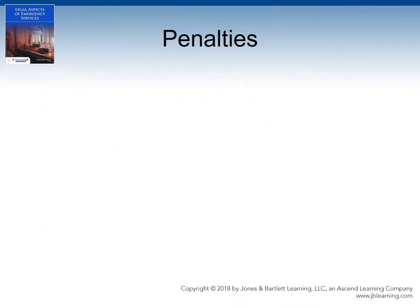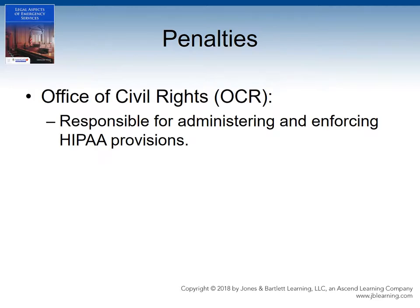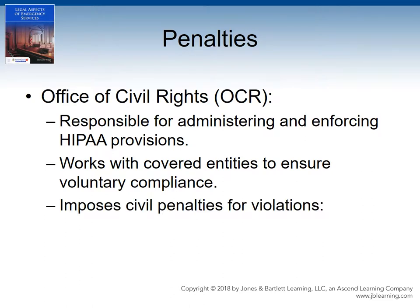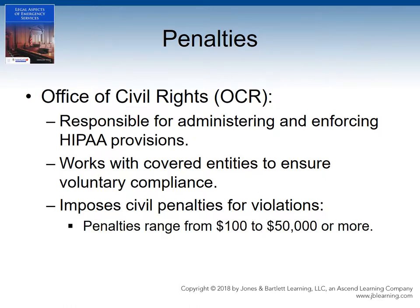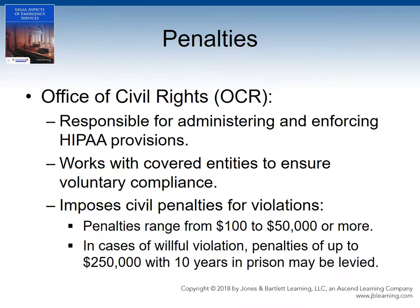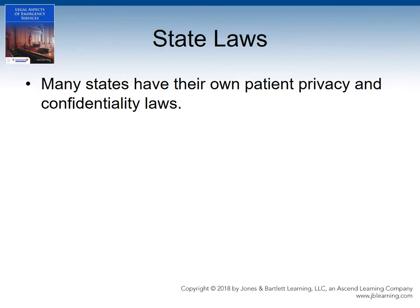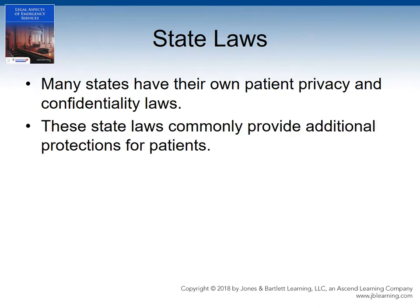If HIPAA is violated by a covered entity, the repercussions can be significant. HIPAA is enforced by the Office of Civil Rights, which will routinely work with covered entities to ensure voluntary compliance but also has the ability to impose civil penalties of $100 to $50,000 or more for a HIPAA violation. If the violation is willful, the penalty may go up to $250,000 with up to 10 years of prison for the responsible party. In addition to HIPAA, many states have their own patient privacy and confidentiality laws that commonly provide additional protections over and above those provided by HIPAA.